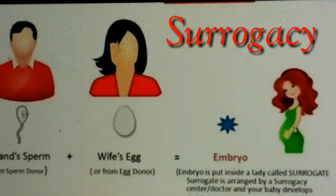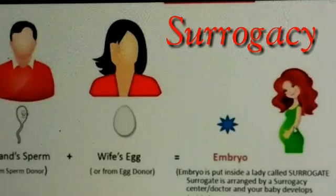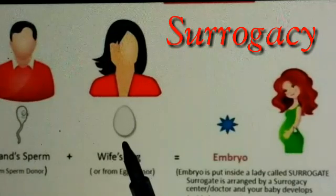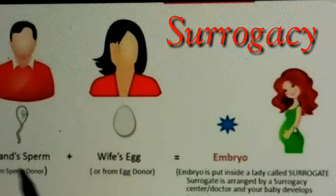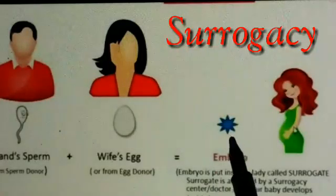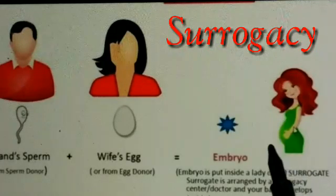Another technology for having children is surrogacy. Surrogacy is used for couples in which the woman is not able to implant the embryo in her uterus. In this case, the sperm from the man and the egg from the woman are collected outside the body, fertilized externally, the embryo is formed, and this embryo is implanted into a woman who has a healthy uterus.